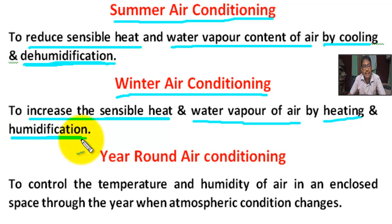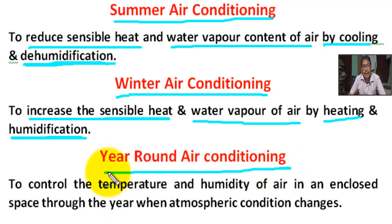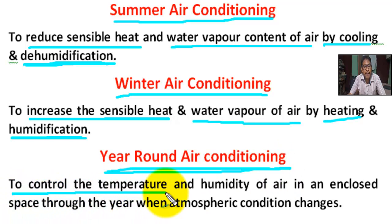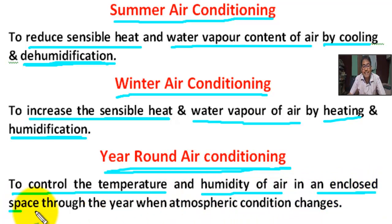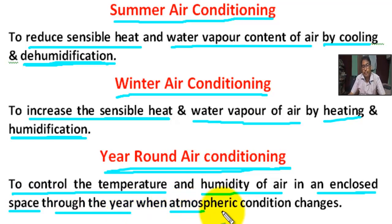What is year-round air conditioning? Year-round air conditioning controls the temperature and humidity of air in an enclosed space throughout the year as the atmospheric condition changes.